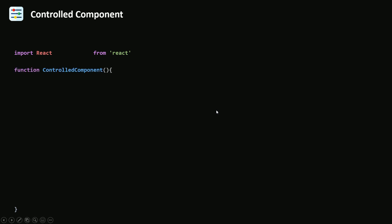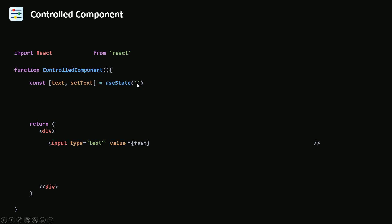I'm going to import React, create a function called controlled component for this example, and return some JSX. Here I'm going to type in an HTML input with the type text. The value of this input is going to be a variable called text. I'm going to create this text using the useState hook and initialize it with an empty string. Of course you need to import useState before using it. The value of this input is text, which is an empty string, so our input has a value of empty string.